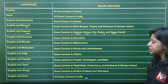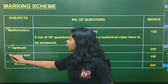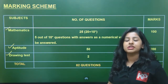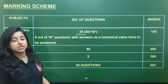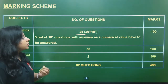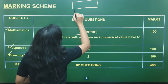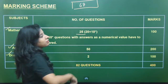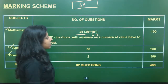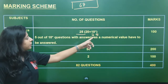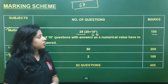Now let's get into the marking scheme. The examination has three sections: Mathematics, Aptitude, and Drawing Test. In Mathematics, there are a total of 25 questions: 20 questions in MCQ format with four options, and 10 questions in numerical value format where you input the answer directly — out of which you only need to attempt 5. Every question carries 4 marks, so the total for Mathematics is 100 marks.